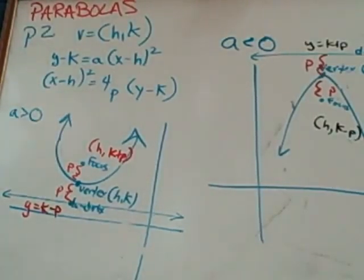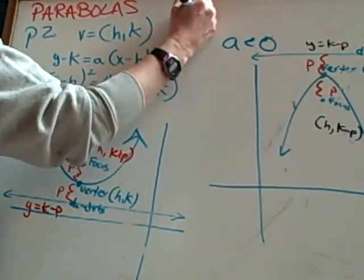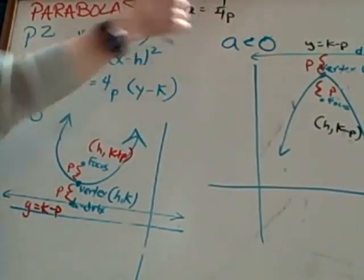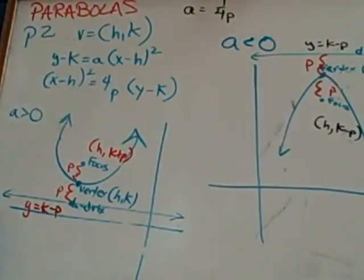You could also write it as x minus h quantity squared equals 4p times y minus k. Again, they're just interchanging the a with the 1 over 4p, and you've got the x squared in both of these, just to let you know where we're headed.